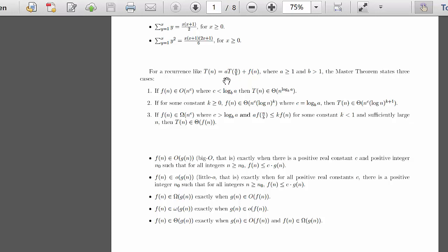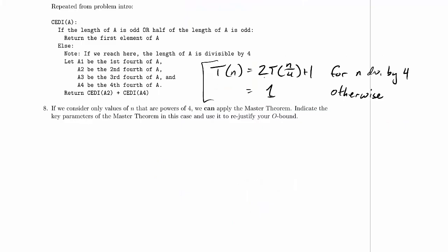And that shouldn't be too hard, we just need to pattern match against the a here, the b here, and the f(n) over there. So this is a, so here's our a, 2, T(n/b), here's our b, 4, plus f(n), so here's our f(n), 1.